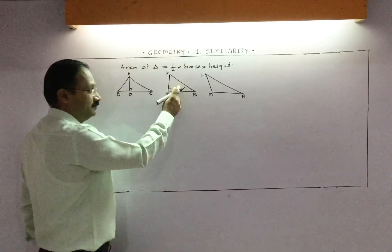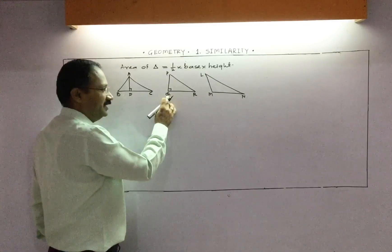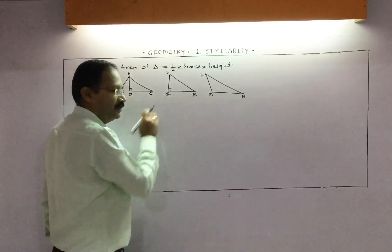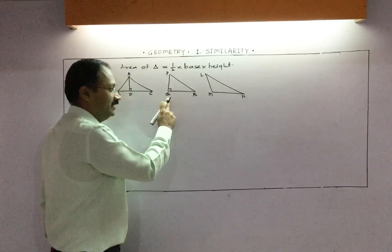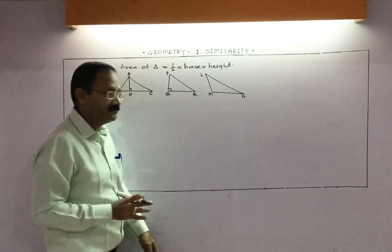In the second figure, PQ makes a 90-degree angle with QR. Therefore PQ is the height and QR is the base.